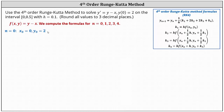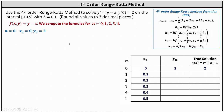Before we start our calculations, let's record the information in a table where the first column is x sub n, the second column is y sub n, and the third column is the true solution, which is y of x equals e to the x plus x plus 1. We'll use this third column to see how accurate our approximations are. Because we know x sub 0 equals 0 and y sub 0 equals 2, the first row is 0, 2, 2. Notice for the true solution, y of 0 is also 2.